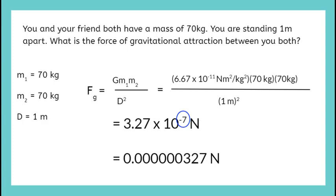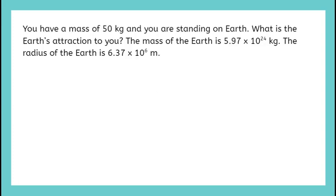Let's try one more example together. You have a mass of 50 kilograms and you are standing on Earth. What is the Earth's attraction to you? The mass of the Earth is 5.97 times 10 to the 24 kilograms, and the radius of the Earth is 6.37 times 10 to the 6 meters.